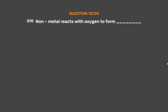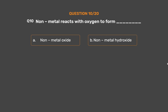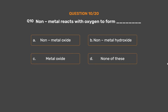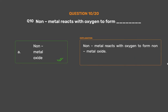Question number 10. Non-metal reacts with oxygen to form ___. Option A: Non-metal oxide. Option B: Non-metal hydroxide. Option C: Metal oxide. Option D: None of these. The correct answer is Option A: Non-metal oxide. Non-metal reacts with oxygen to form non-metal oxide.